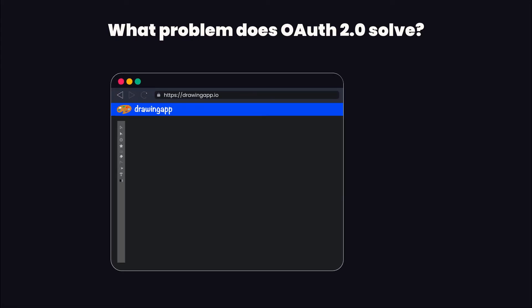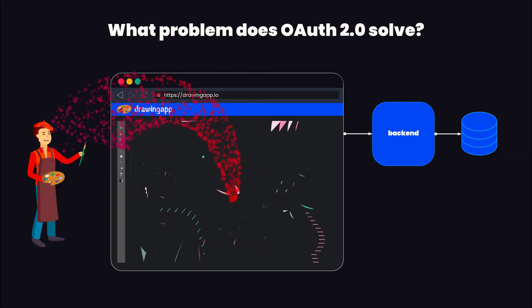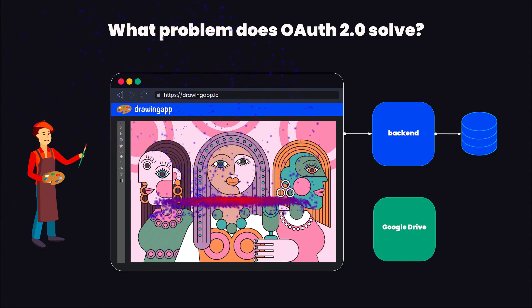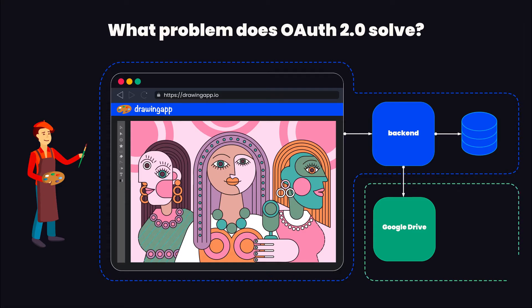Let's say we have some drawing application that runs in a browser and connects to some backend that stores the artwork in a data store. Now let's assume that we also want to automatically upload that artwork from the drawing application to our Google Drive. The issue here is that from the perspective of Google, this drawing application is a third-party application — the two apps literally have nothing to do with each other, and on top of that they are even separate legal entities.